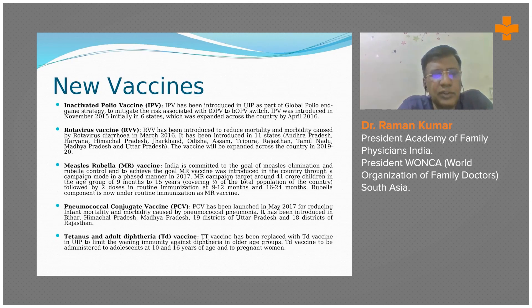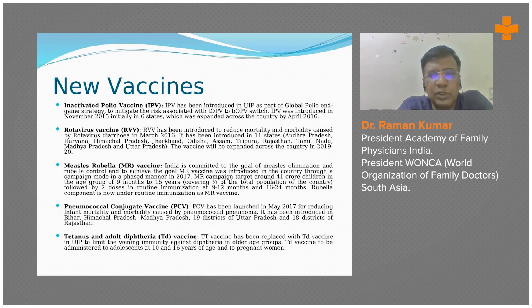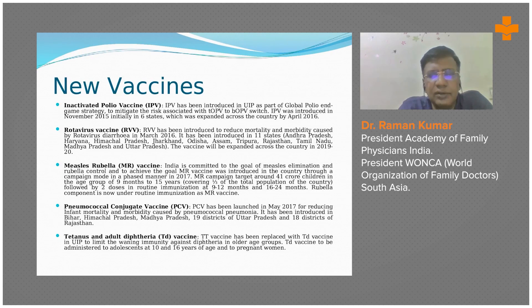The initiative on pneumococcal conjugate vaccine was launched in May 2017, along with MR vaccine, for reducing infant mortality and morbidity caused by pneumococcal pneumonia. It has been introduced in Bihar, Himachal, Madhya Pradesh, 90 districts of Uttar Pradesh, and 18 districts of Rajasthan, with a plan to expand it gradually.